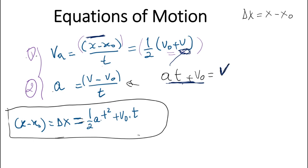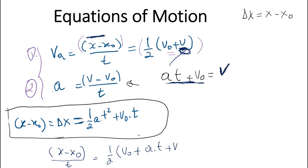So we write: (x minus x₀) over t equals one-half times the factor of v₀, then plugging in the final velocity v equals a·t plus v₀. Now we have two v₀ terms inside the bracket.